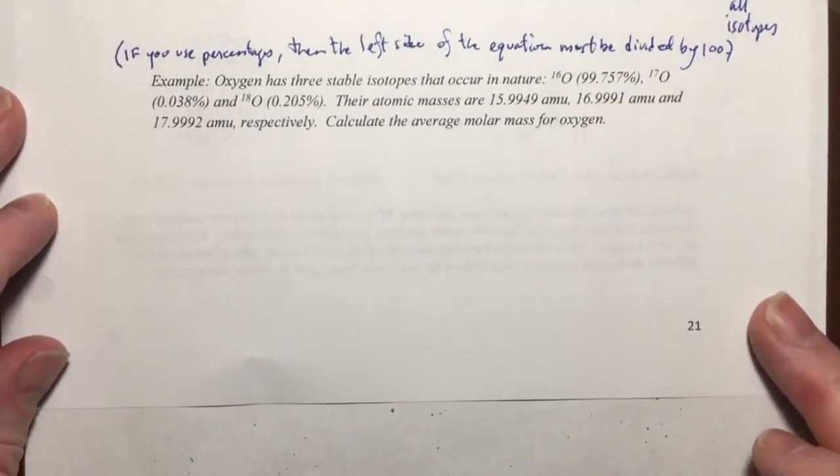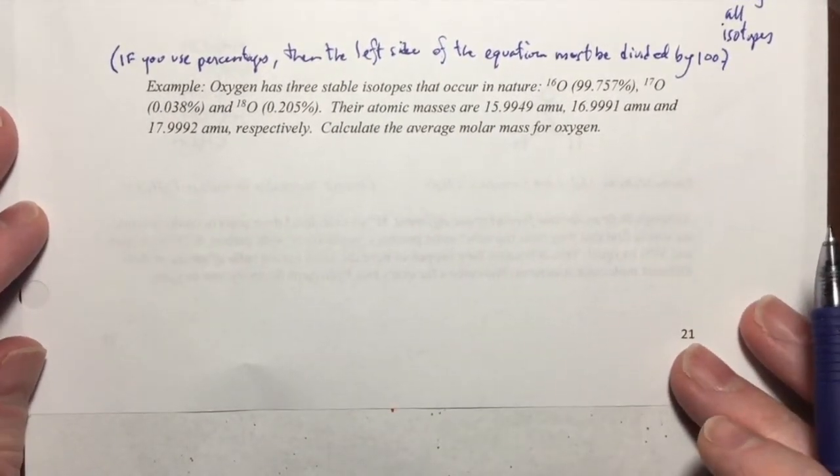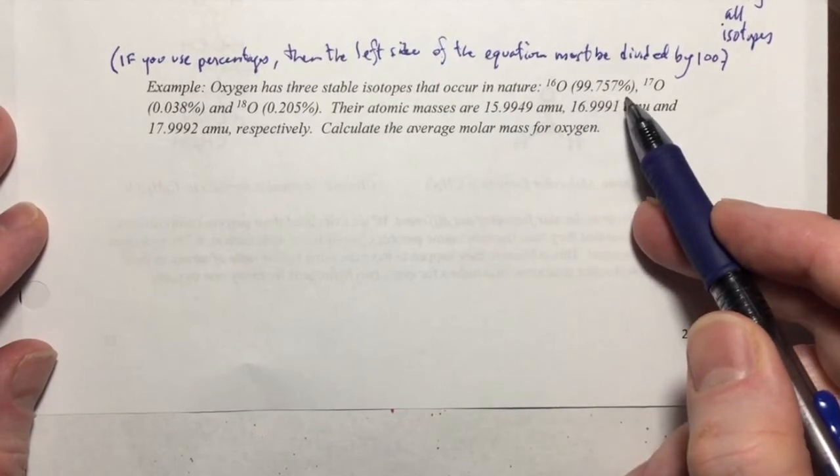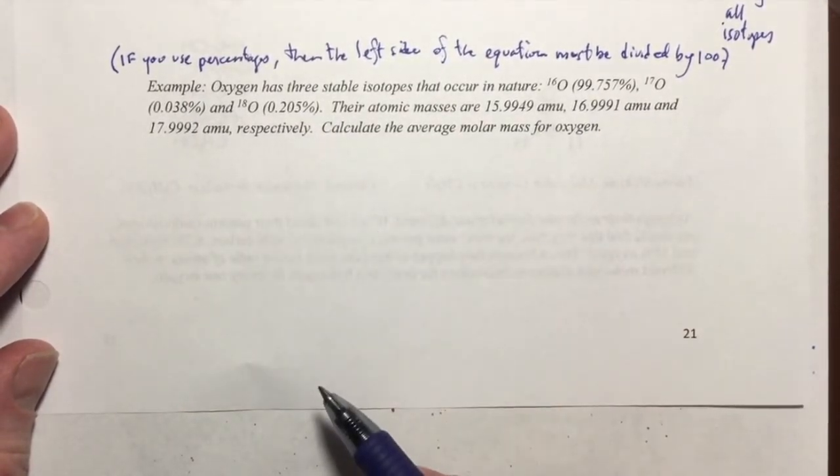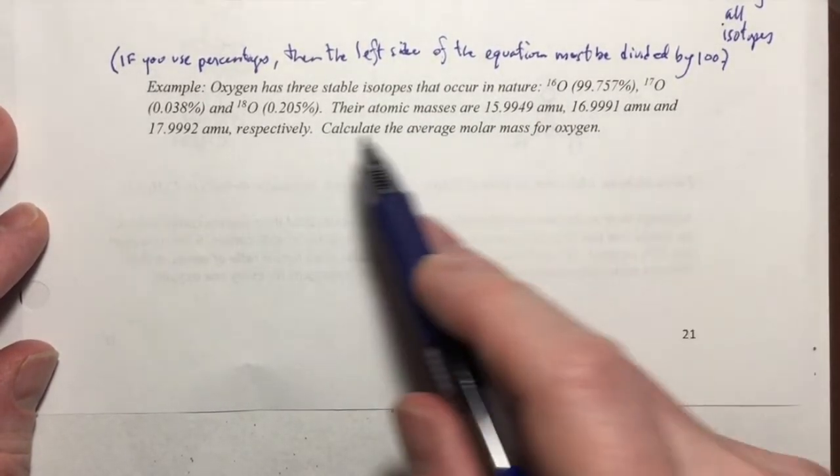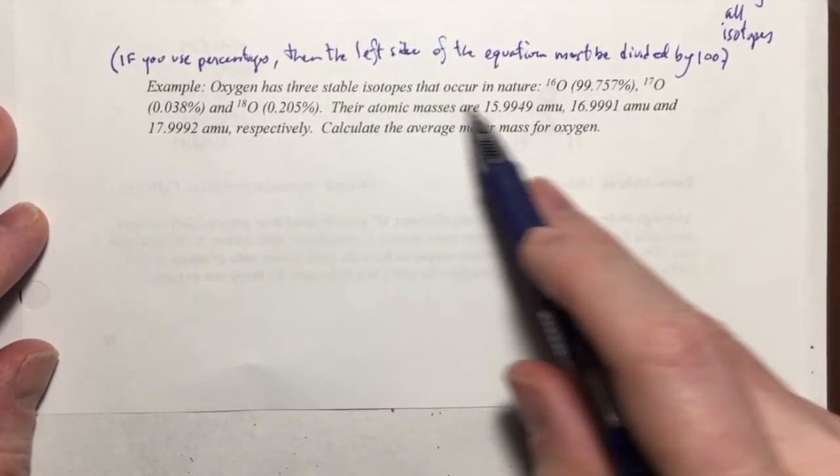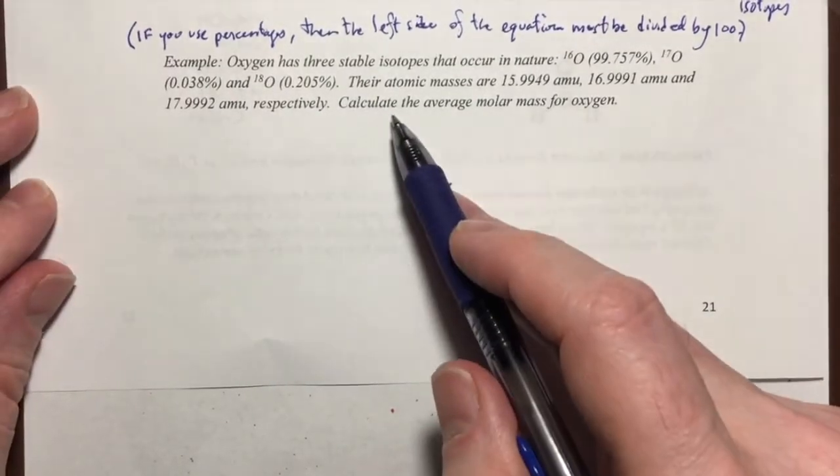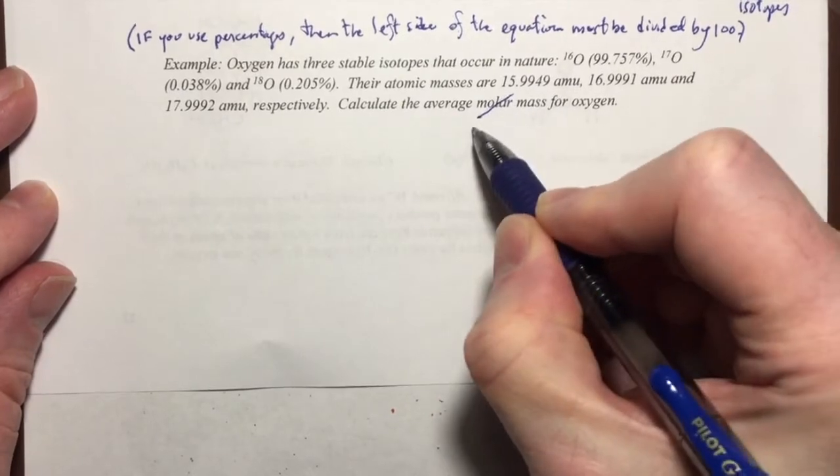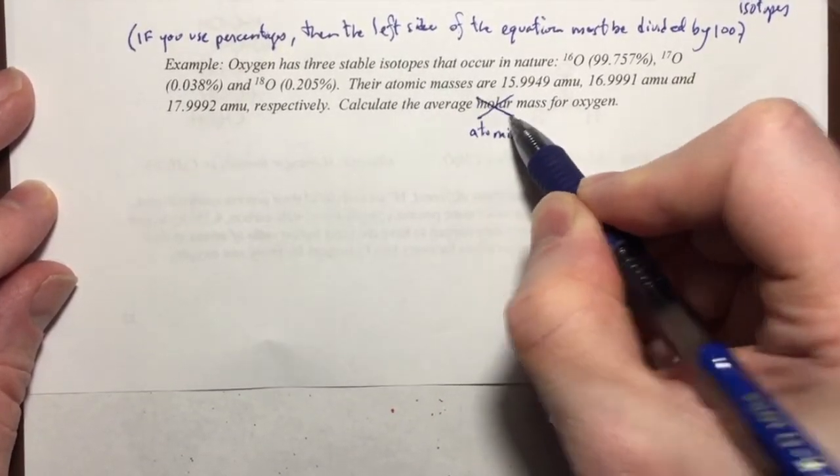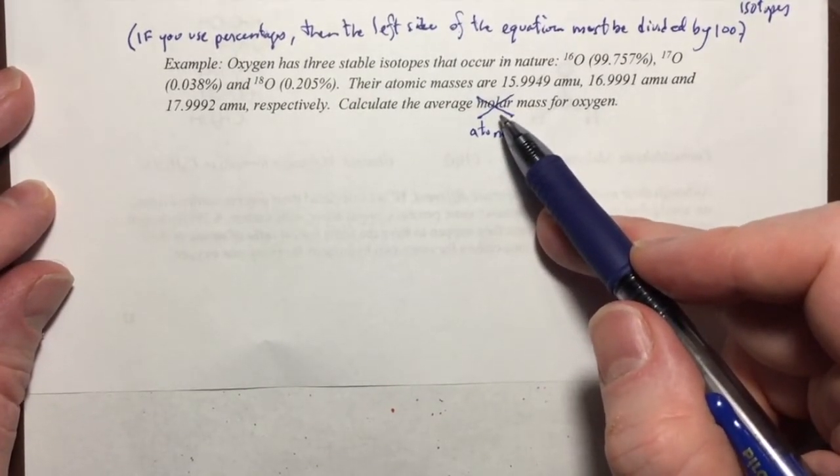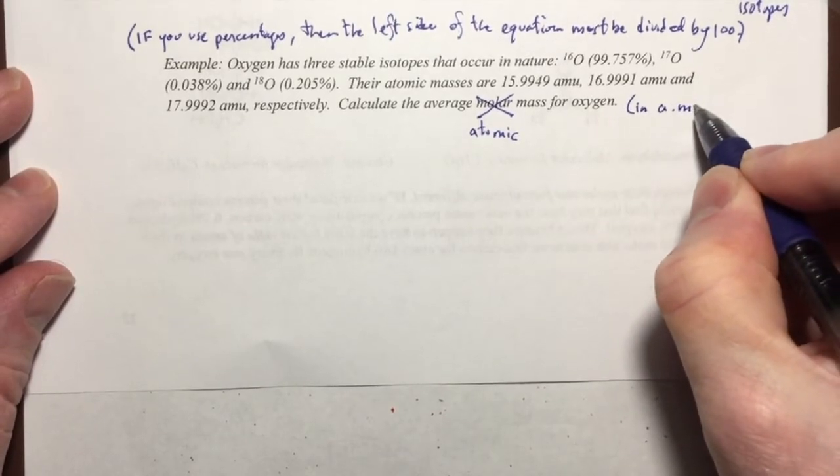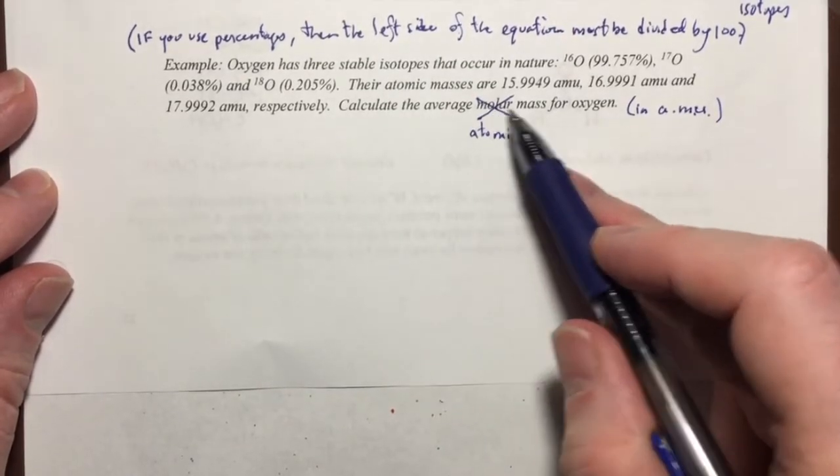I've given you a sample problem down here. Oxygen has three stable isotopes that occur in nature: oxygen 16, oxygen 17, and oxygen 18. You're given the percentages, the percentage abundance of each of them, and the masses for each of those isotopes. With this information and the general equation I've shown you, I would like for you to calculate the average atomic mass. We're not interested in the molar mass. It will be reported in AMUs.